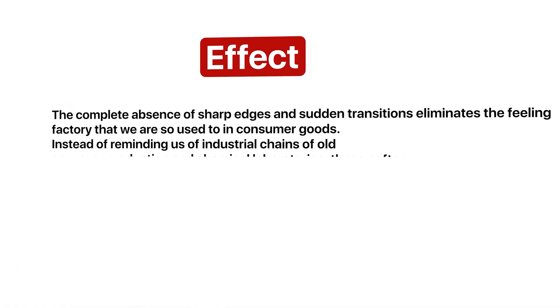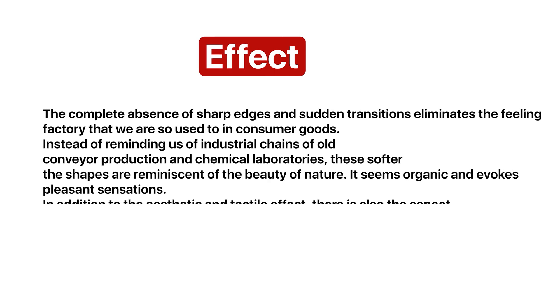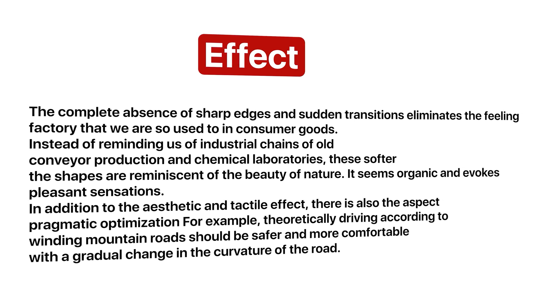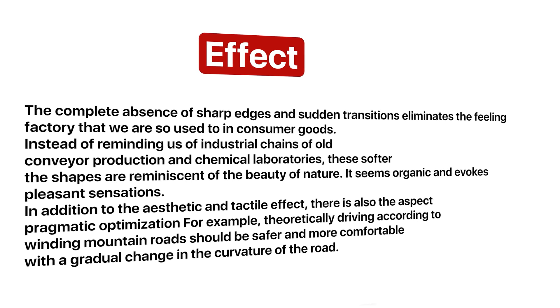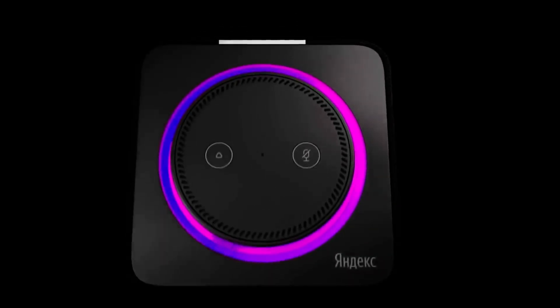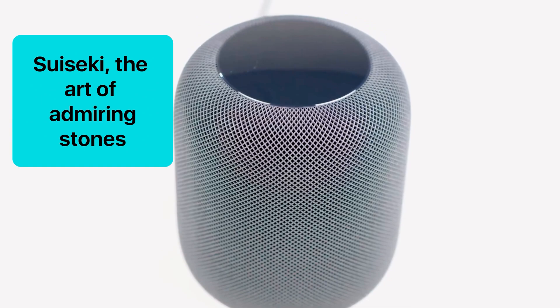The smooth flow of shapes and the absence of sharp transitions make Apple products not only attractive in appearance. There is even an excellent remark on this from an article by Nikolai Gellar. Let me quote him: 'Instead of reminding us of industrial supply chains, conveyor production and chemical laboratories, these softer forms remind us of the beauty of nature. It seems organic. It creates positive vibes.' For example, if you compare the design of Apple HomePod and Yandex Station, it becomes clear why the station looks less attractive — it was as if it had just been released from the factory, and the Japanese master Suseki seemed to have found a HomePod in his garden. Although the Yandex Station itself is an excellent device, and the HomePod is beautiful, but it's stupid — it doesn't know Russian.